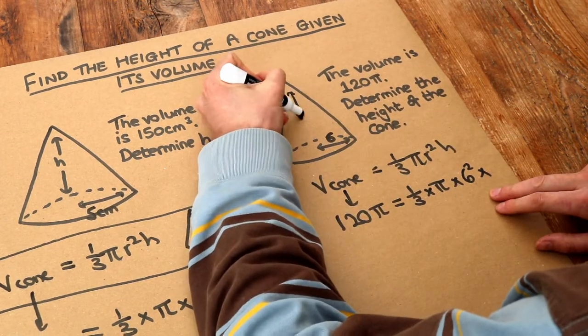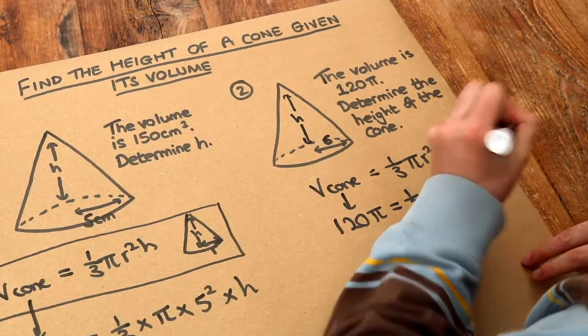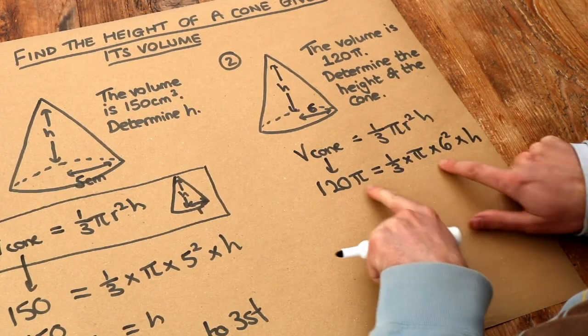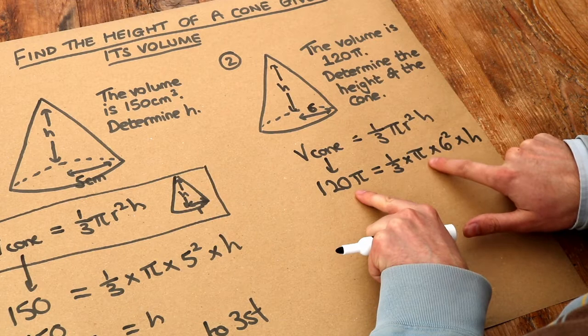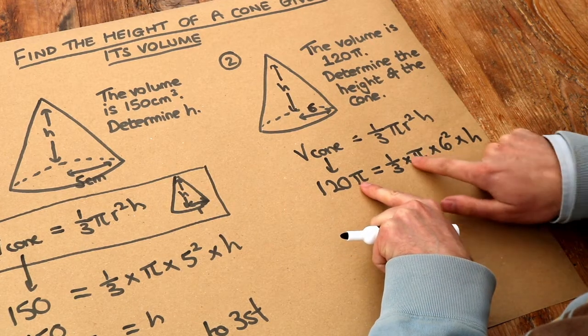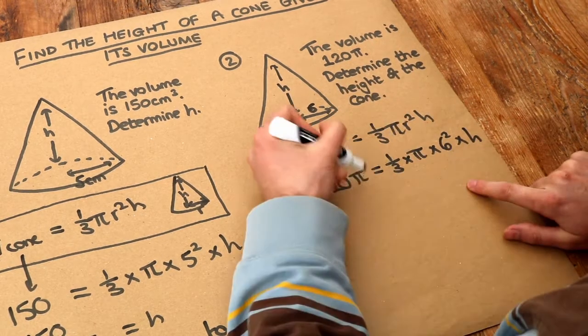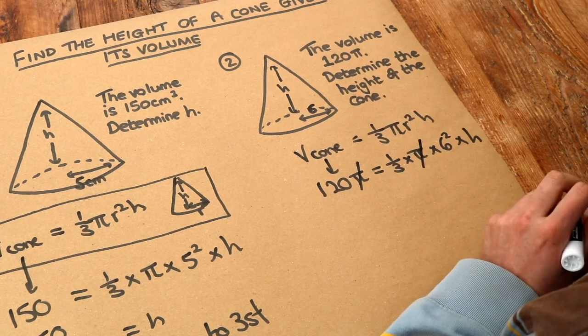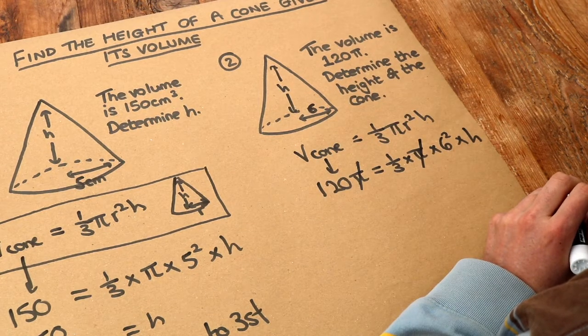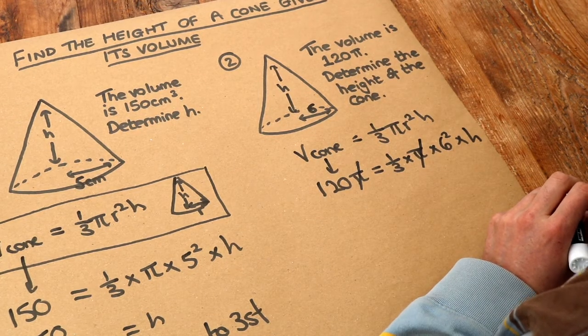And then can you see that we could divide both sides of the equation by pi, because we've got pi here and we've got a pi in this multiplication here? So let's just cross out the pi to make them cancel, because we're dividing both sides by pi.